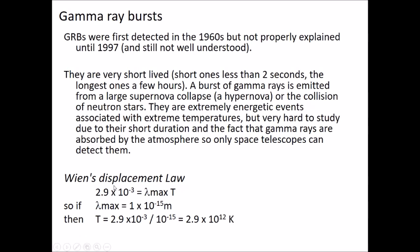Here we can see an example from Wien's displacement law: 2.9 × 10^-3 = λmax T. So if λmax is 1 × 10^-15 m, then T = 2.9 × 10^3 / 10^-15 = 2.9 × 10^18 K. They're associated with a very hot object.